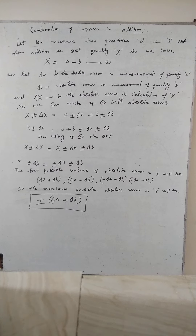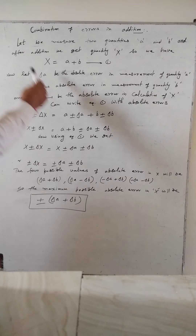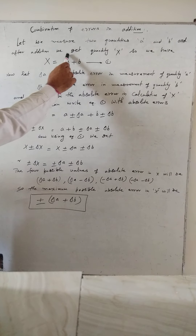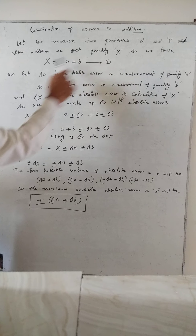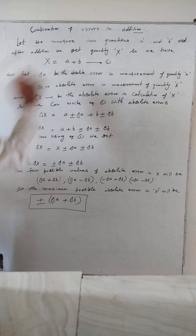Dear student, as we know that the error propagates during arithmetic operations. Now first of all we discuss about the combination of error in addition. Let we measure two quantities A and B, and after addition we get quantity X. So we have X is equal to A plus B.